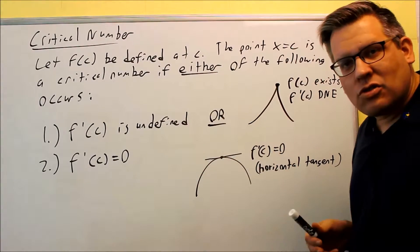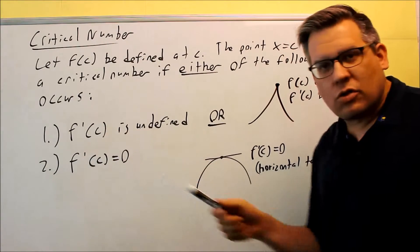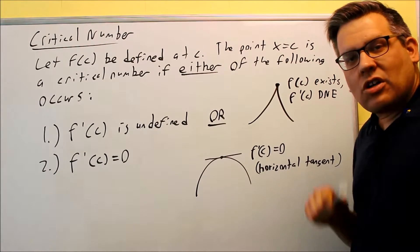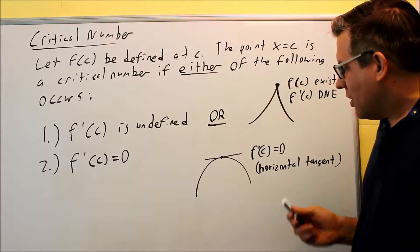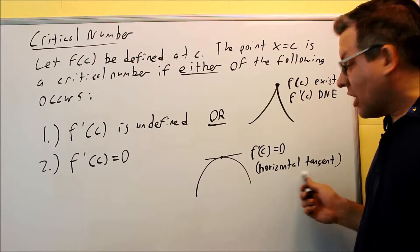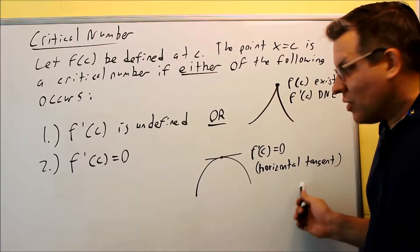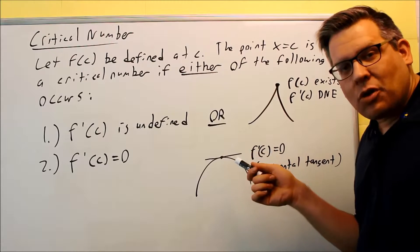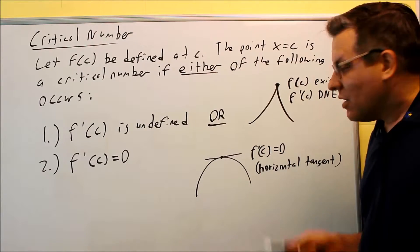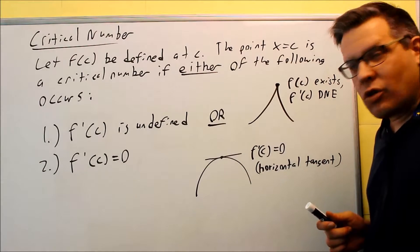Let's talk about the two situations. Let me first talk about number two. If you take the derivative, set it equal to zero and solve for C and you get a value for it, then what happens is at that point you have a horizontal tangent. The place where that occurs at, we're saying that's going to be the critical number. Wherever there is a horizontal tangent, for sure that's going to be a critical number.